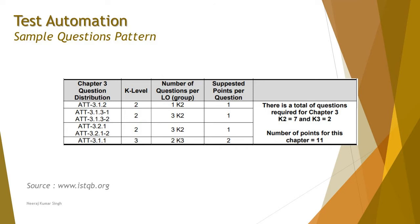There are altogether nine questions which can be asked, where we see a lot of questions appearing from K2, but we also have two questions from K3. So seven questions from K2 and two questions from K3, and the number of points for this chapter is 11, as some of the questions have more value in terms of K3. Let's quickly see some of the questions from this chapter.